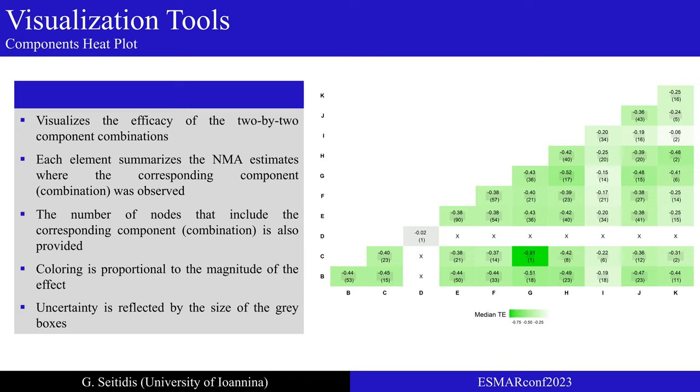To identify more easily the most promising components, each element was colored according to the magnitude of its effect. Green color is used to reflect an effect estimate on the desired direction, while red color is used to reflect an effect estimate on the opposite direction. In this example, most elements are green, indicating that the components reduce the level of glycated hemoglobin compared to the control group. However, we are moderately confident about the results because of the uncertainty in the estimates, which is reflected by the size of the gray boxes. The smaller the box, the more confident we are about defining. Components heat plot can be also adjusted to display Z values instead of relative effects.